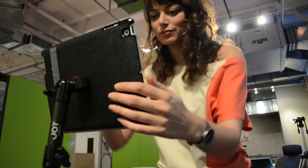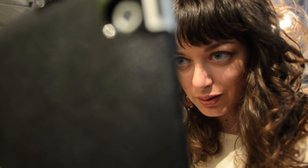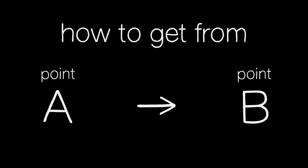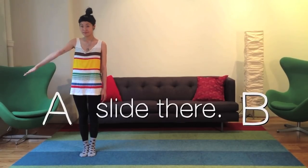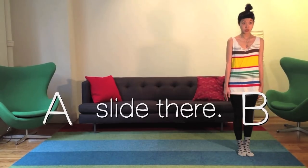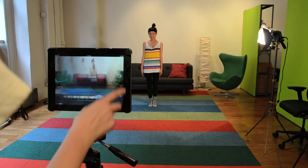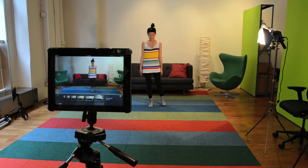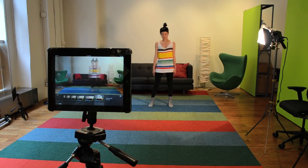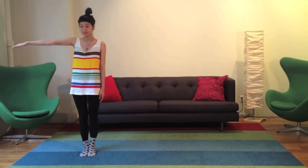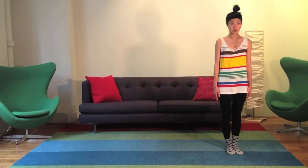We used a tablet and one of the many stop-motion apps out there. We started off by taking a bunch of pictures of Celeste in place. Then, just like stop-motion animation, the character is moved just a bit before the next picture is taken, which in this case creates a sliding effect.